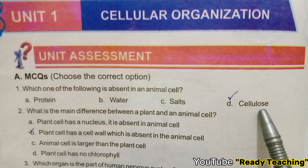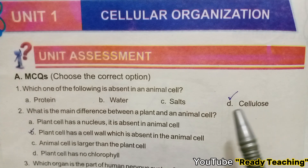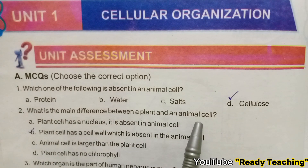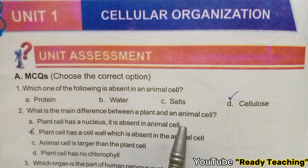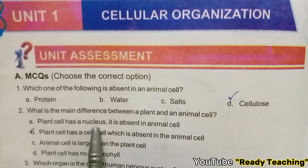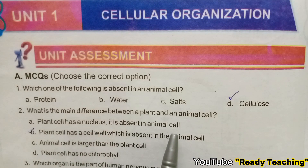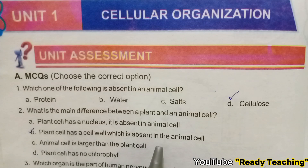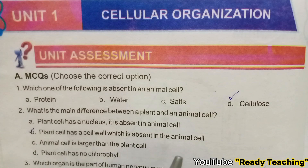Cellulose is part of the cell wall, and the cell wall is found in plant cells, not animal cells. Second question: What is the main difference between a plant and an animal cell? Option: Plant cell has a nucleus — incorrect, nucleus is present in both. Correct option: Plant cell has a cell wall which is absent in the animal cell. That option is correct.